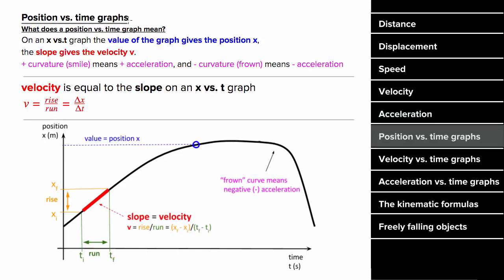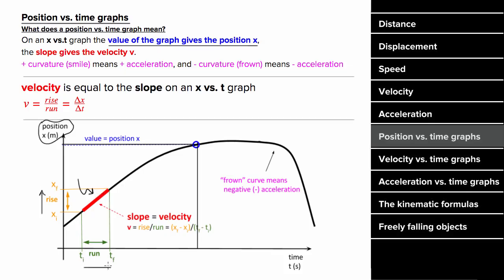How do you interpret a position versus time graph? The value of the graph gives you the position X — at some time T, the value on the vertical axis gives you the position at that time. One key reason we care about position versus time graphs is that the slope equals the velocity of the object. To find the slope, you find the region of interest and take rise over run, which is the change in X over the change in time for that portion of the graph. Since rise over run here is displacement per time, the slope equals the velocity.